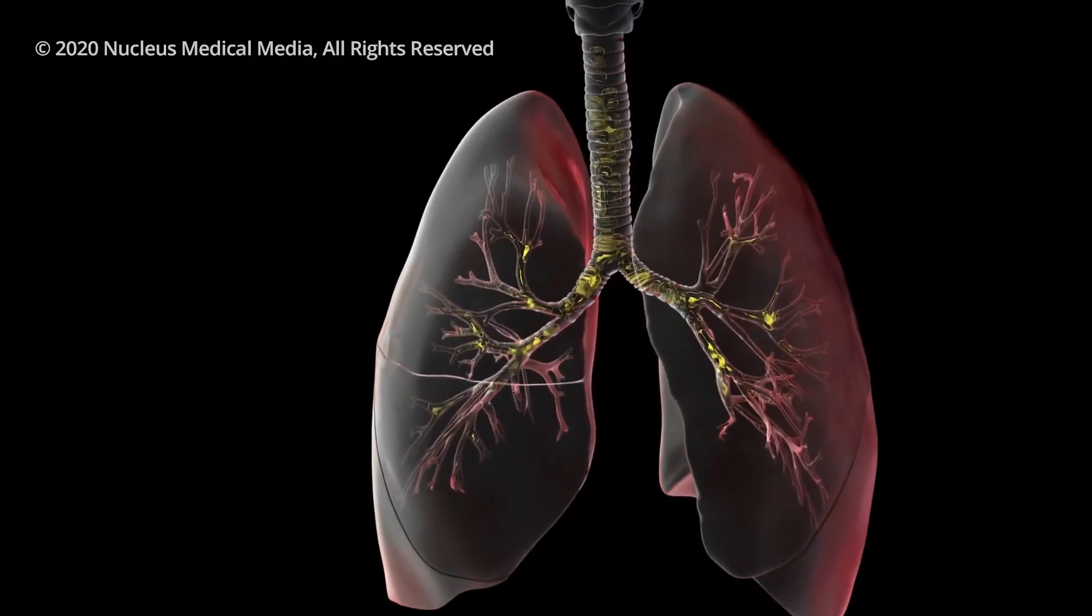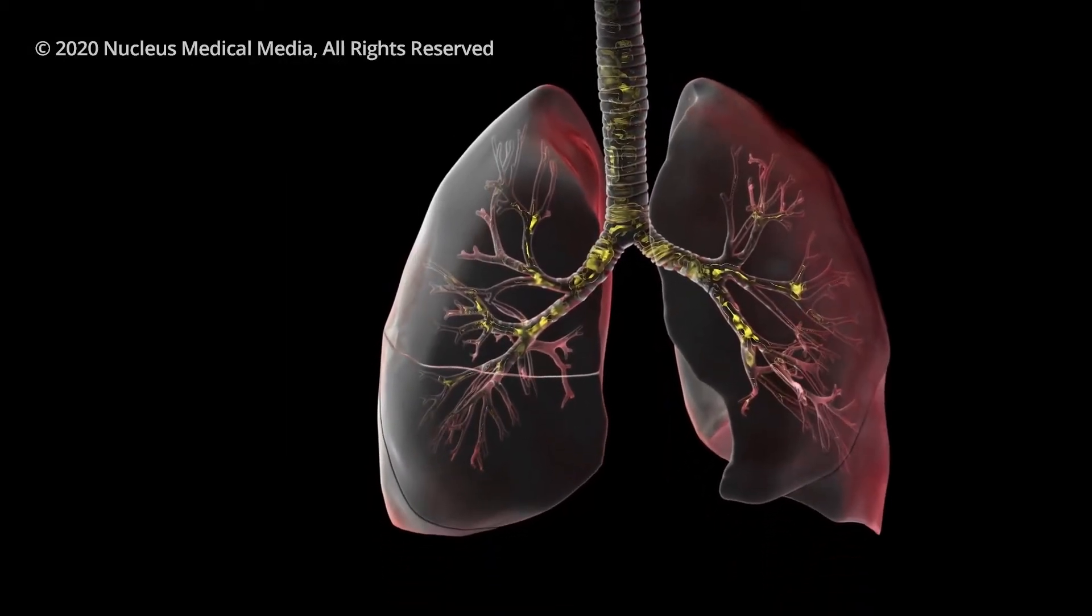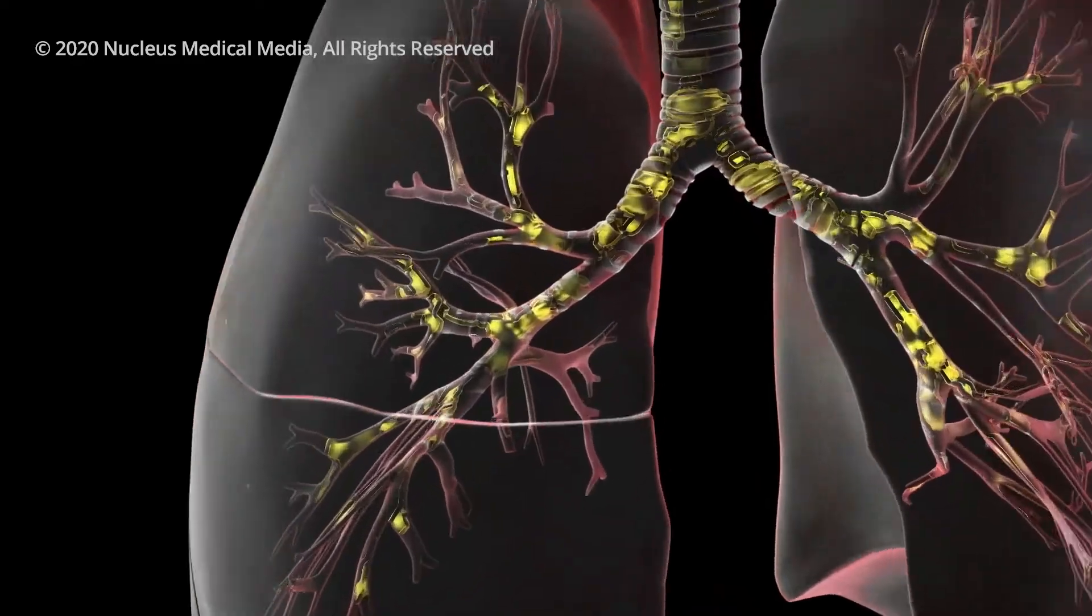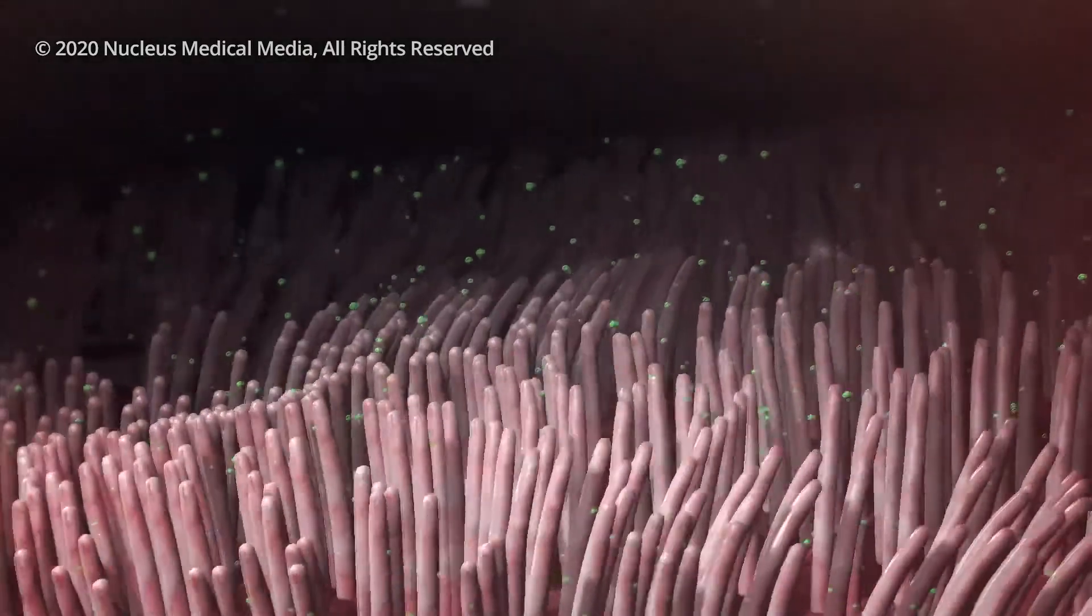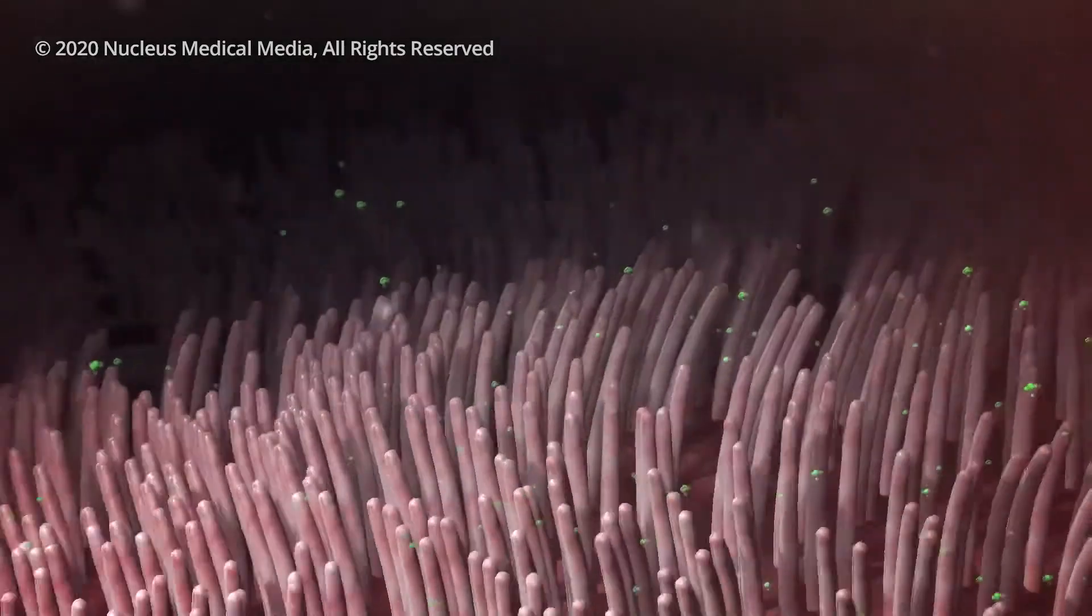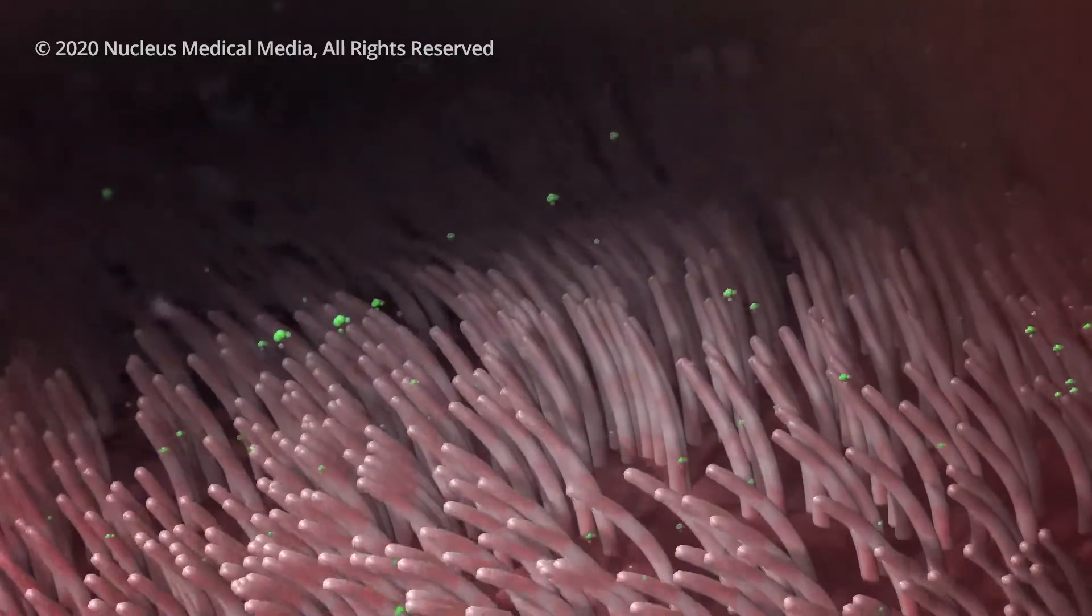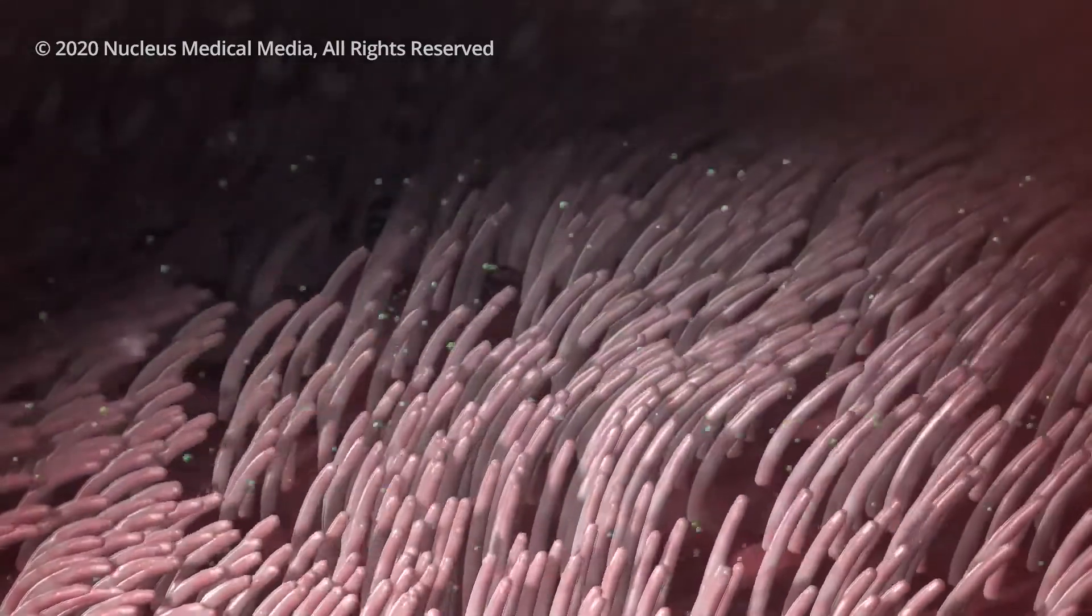Your airways catch most germs in the mucus that lines your trachea, bronchi, and bronchioles. In a healthy body, hair-like cilia lining the tubes constantly push the mucus and germs out of your airways where you might expel them by coughing.